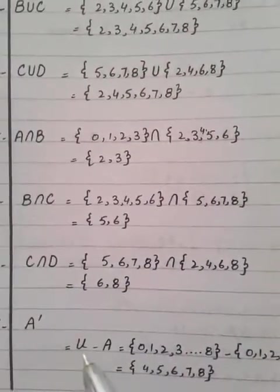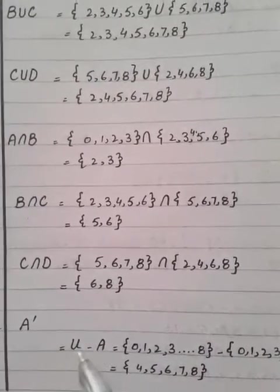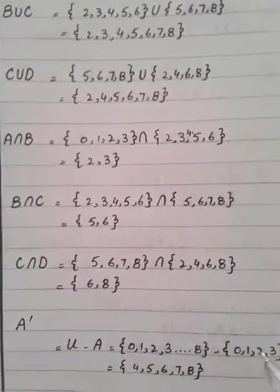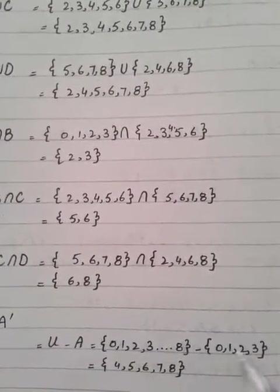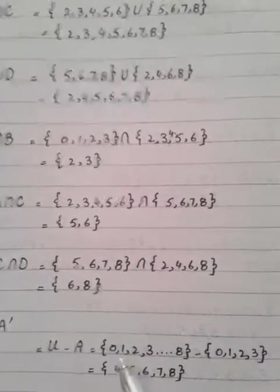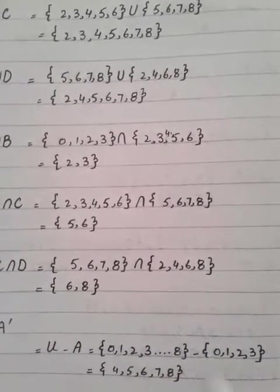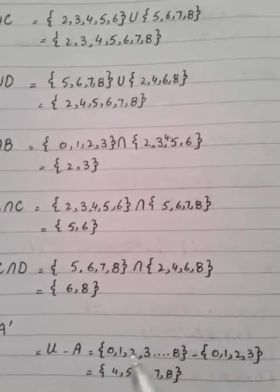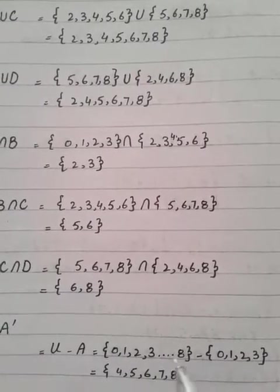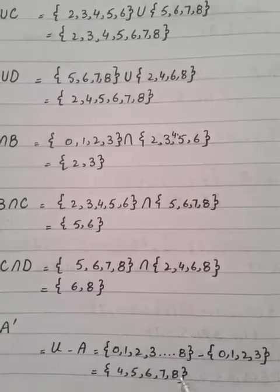For complement: U minus A — write all elements of the universal set U, then remove the elements that are in set A. Elements 0, 1, 2, 3 are in set A, so the remaining elements — 4, 5, 6, 7, 8 — are not in set A. Write those as the complement of A. Similarly, for other sets, apply U minus C or U minus D to find their complements.